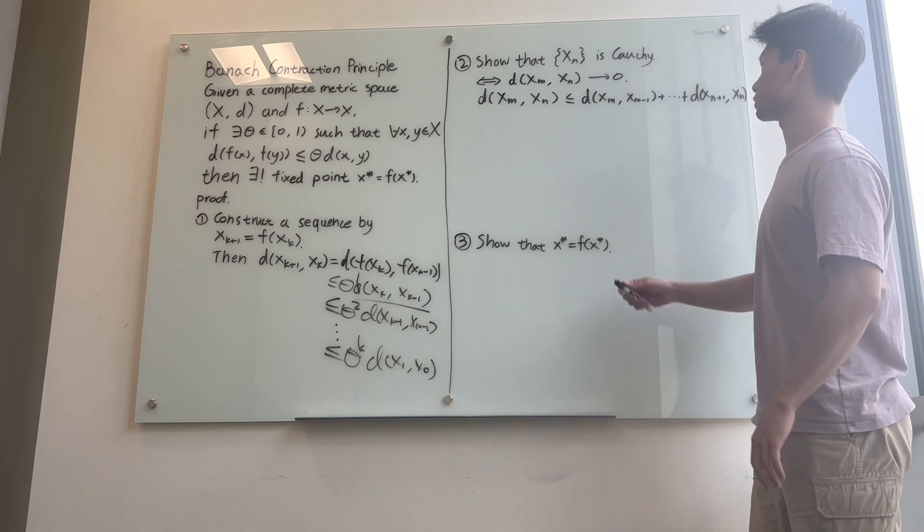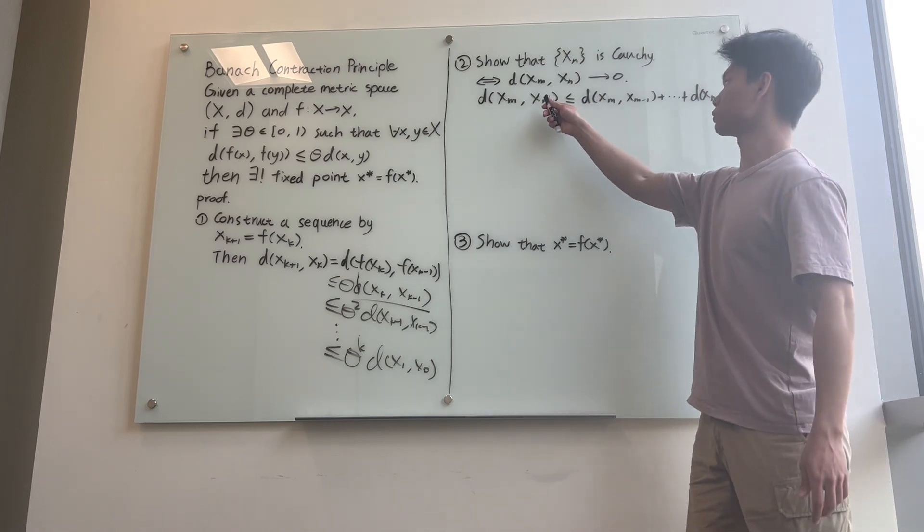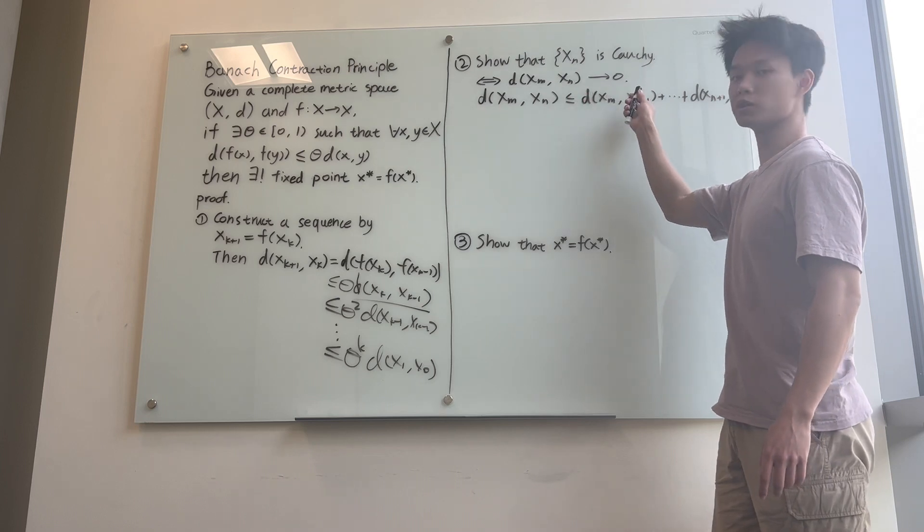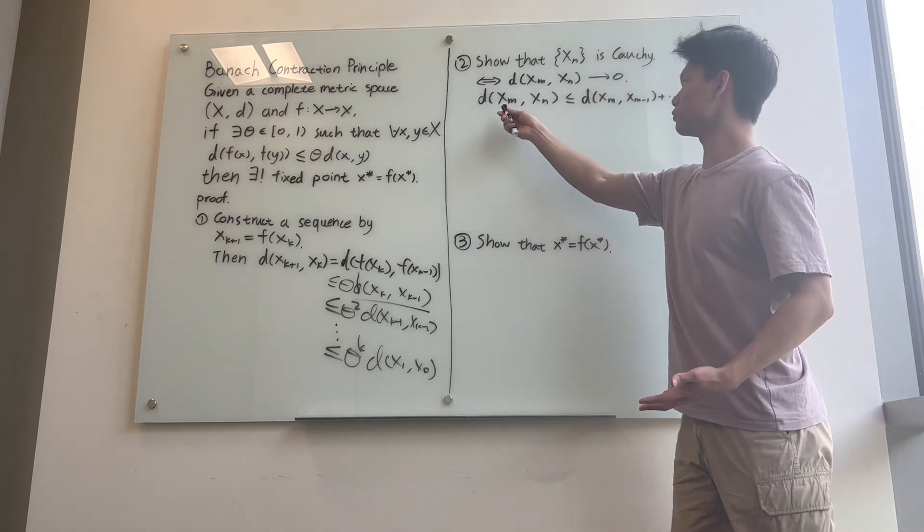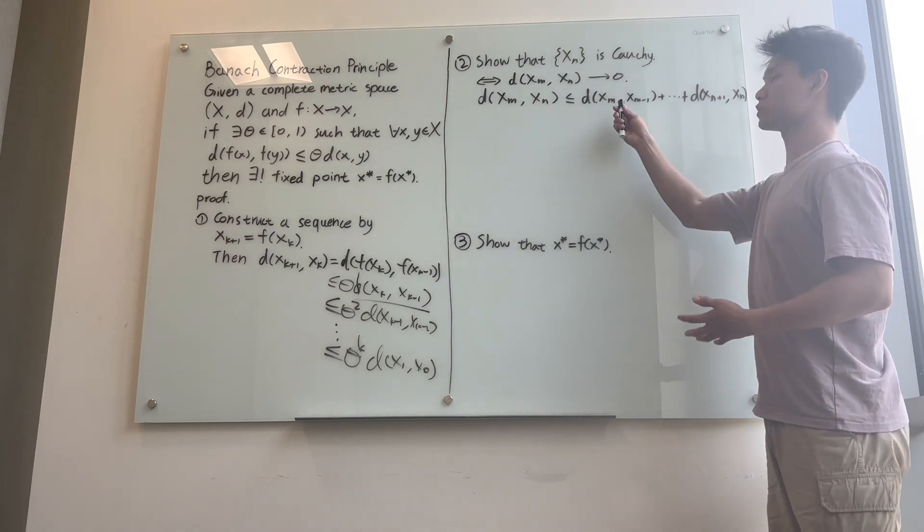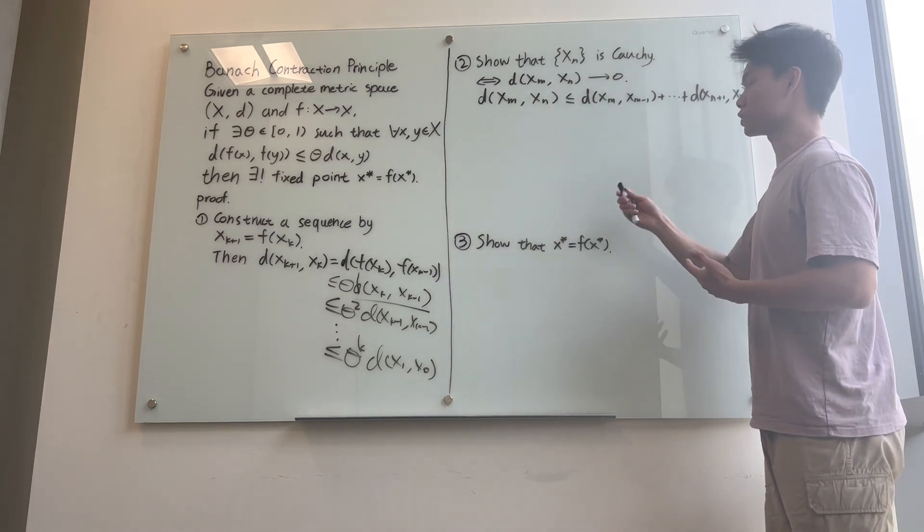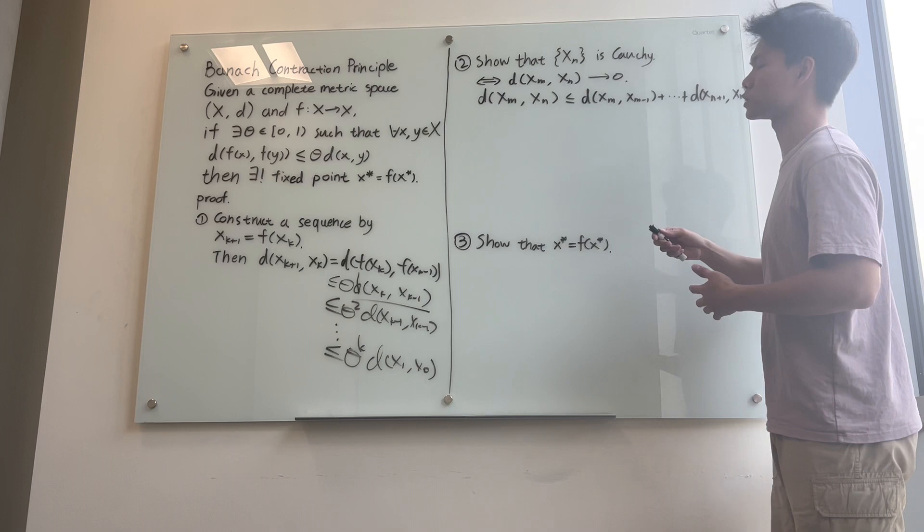Next, we're going to show that the sequence we construct is Cauchy, which is equivalent to showing that d(x_m, x_n) goes to 0 as m and n go to infinity. And assuming m is greater than n, d(x_m, x_n) is less than the sum of the distances of the consecutive terms between x_m and x_n by triangle inequality.